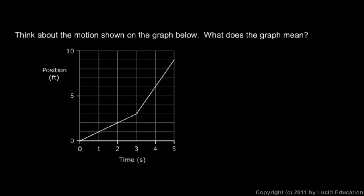Take a look at this graph and think about the motion shown. This graph is in two distinct sections: one segment on the graph is there, and then another one there. What does that mean?